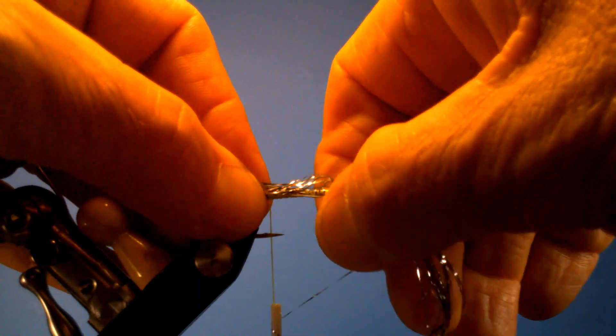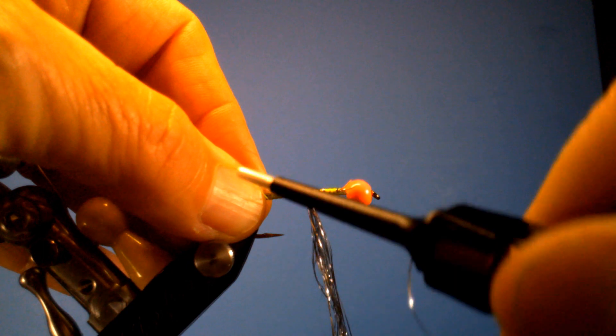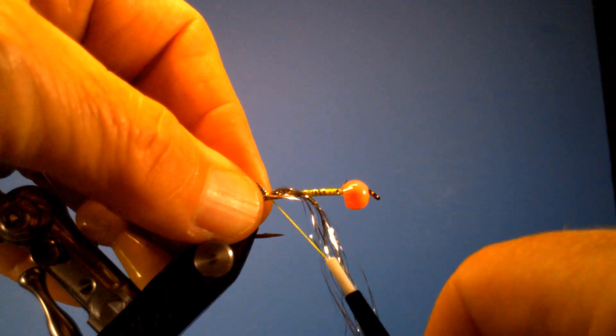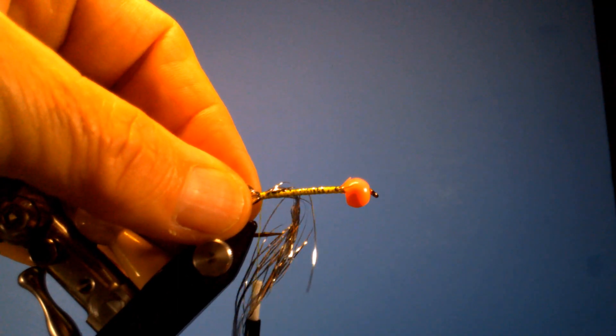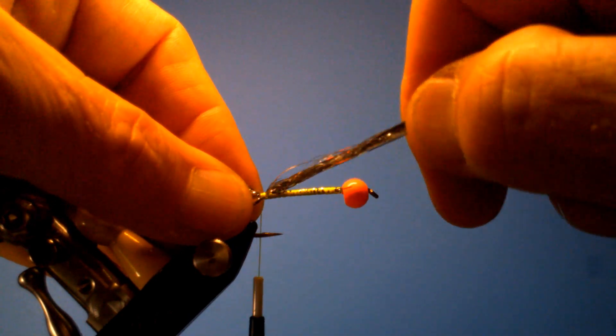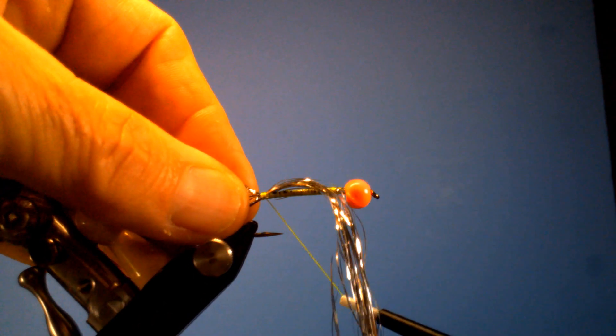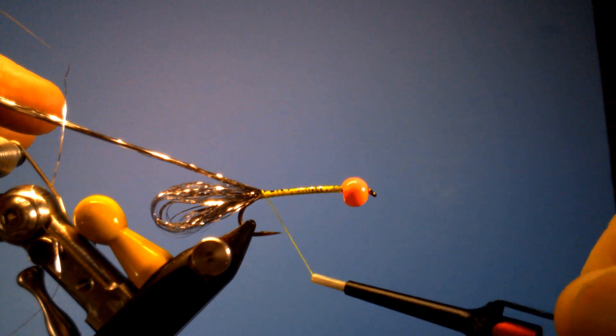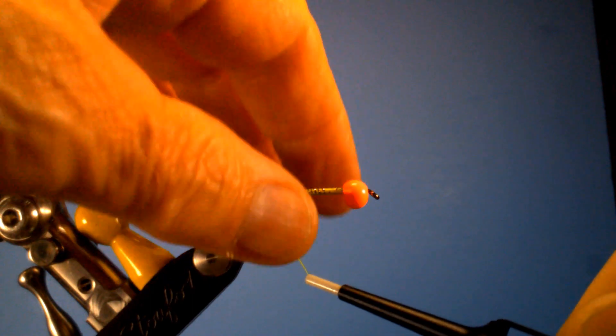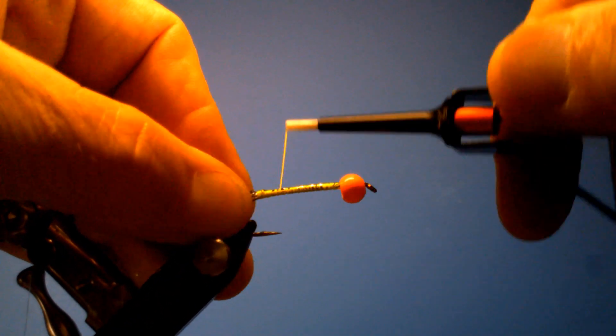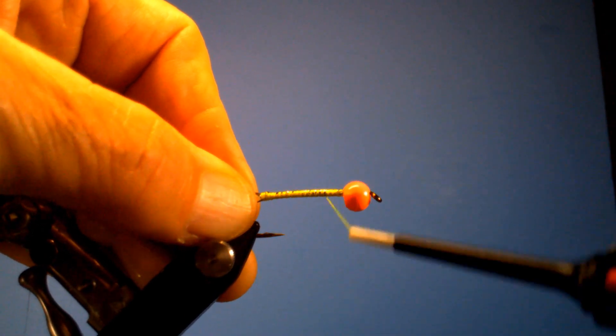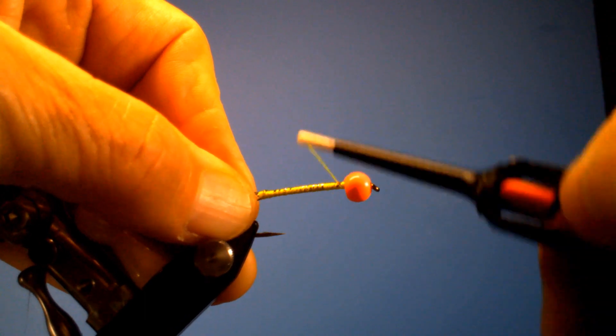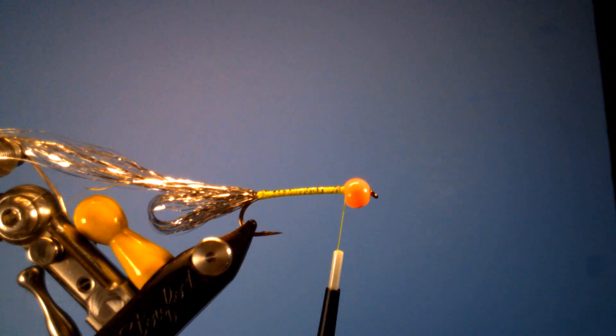Shad are very notorious for short striking, just hitting at the tail. They're not really eating your fly. They eat plankton and small plants. What they're trying to do is protect their eggs, and when they see something come in, they kind of nudge it and scare it out of there. Sometimes they will eat your fly pretty good.